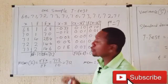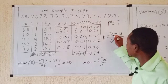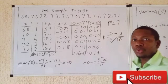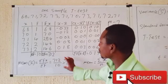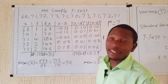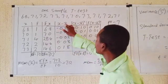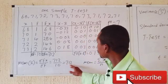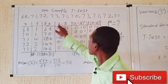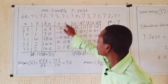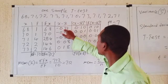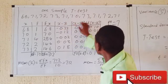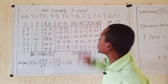Once you have the mean, proceed to calculate the standard deviation — you can watch the standard deviation video for more detail. I'll construct a table with columns for x, (x − x̄), (x − x̄)², and f·(x − x̄)². Here x̄ is 7.12. For example, for x = 6.8: 6.8 − 7.12 gives a difference, then square that value. Multiply the squared value by the frequency f.